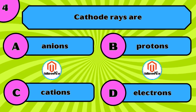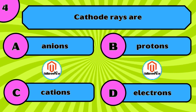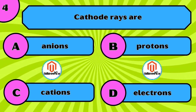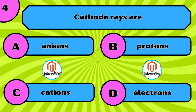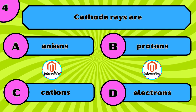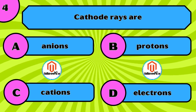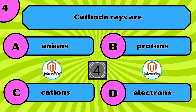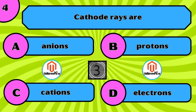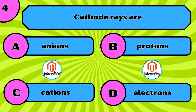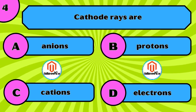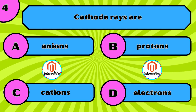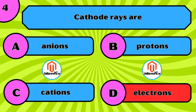Cathode rays are: A) anions, B) protons, C) cations, D) electrons. The correct answer is D, electrons.